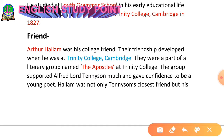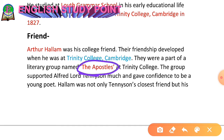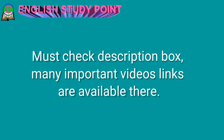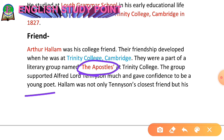The Apostles was a group of Cambridge students and scholars. When Tennyson and Hallam were studying at Trinity College, they were part of The Apostles. This group supported Alfred Lord Tennyson and encouraged him to become a great young poet, playing a valuable role in his early literary development.